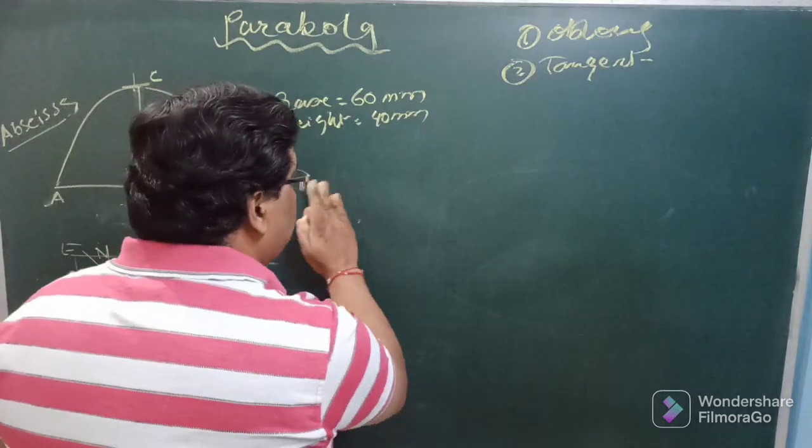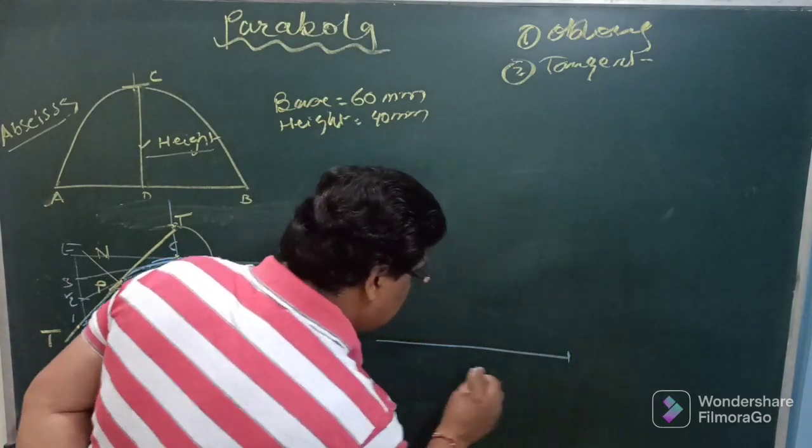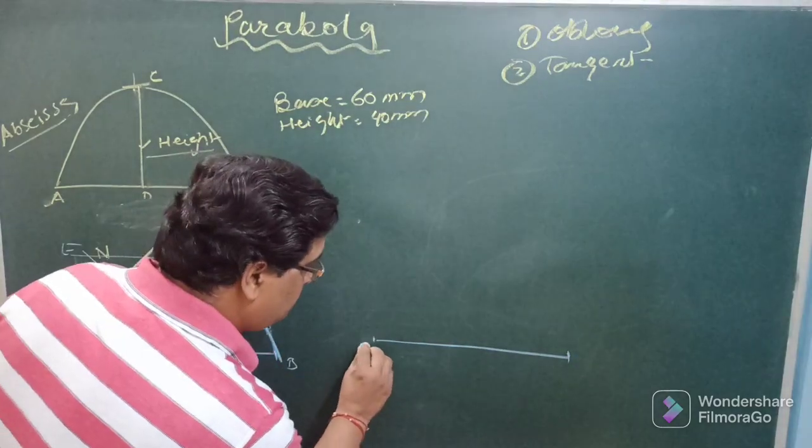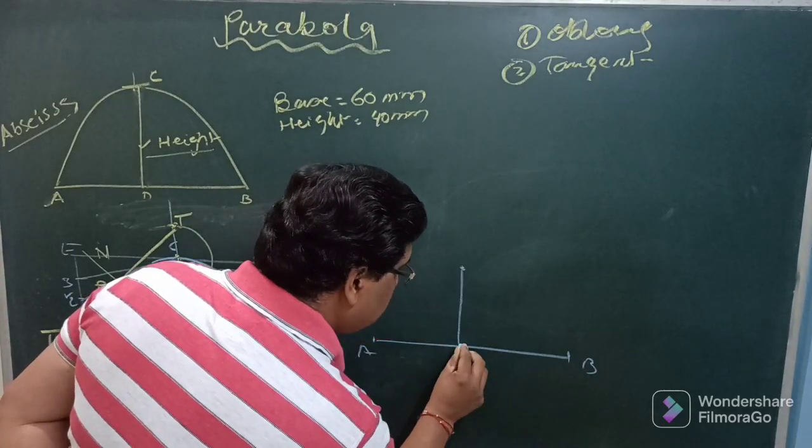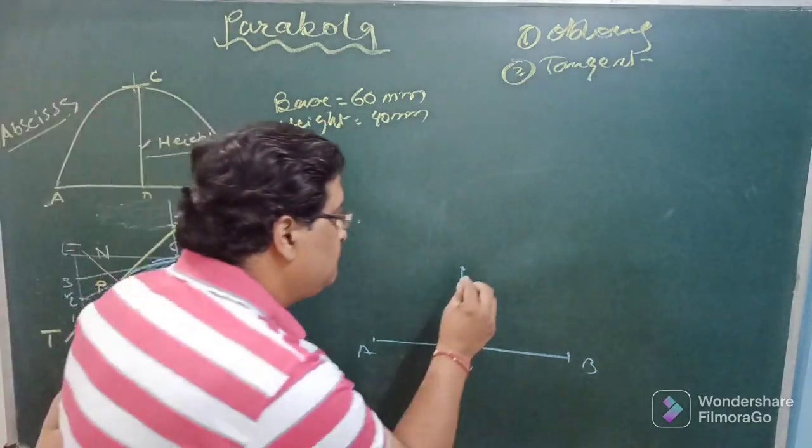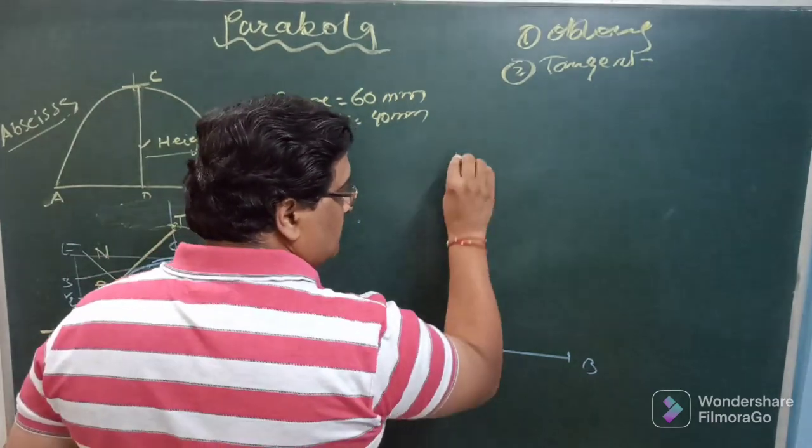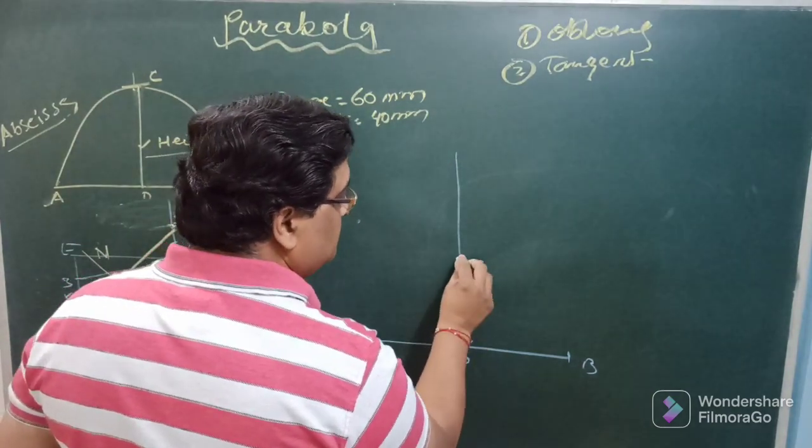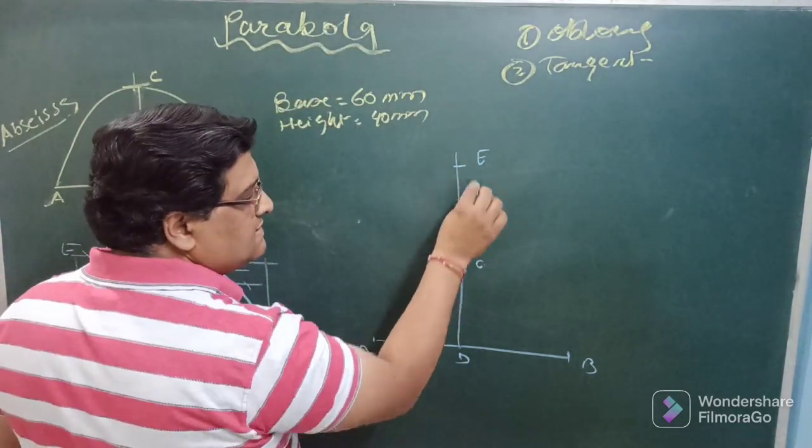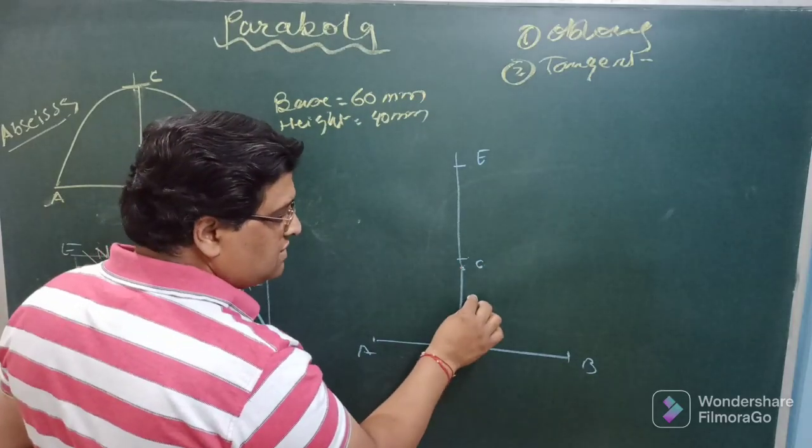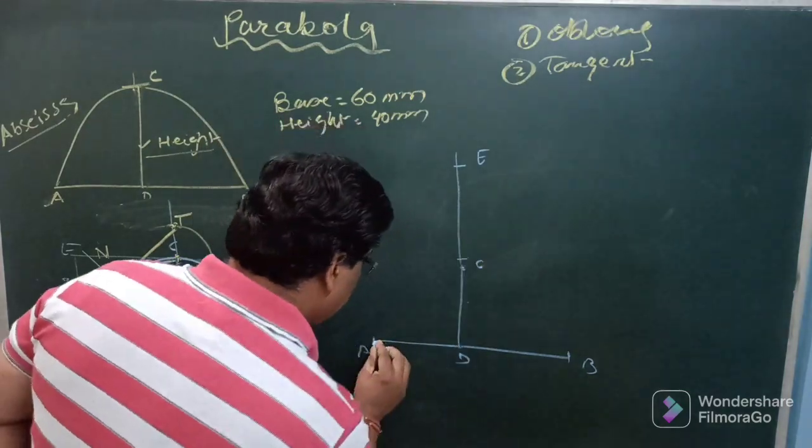Second method, the tangent method. What you have to do in this, first of all draw the line AB of 60 millimeter, draw CD 40 millimeter like this. Then what you need to do just extend this CD equal to length of CD, means say we have to obtain a point E where EC is equal to CD. So you just have to extend double the this height, then join E with A and B with E. So both of the point A and B will be joined with E.